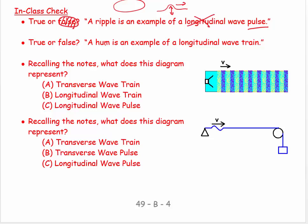True or false: a hum is an example of a longitudinal wave train. It's a train because it goes on and on — oscillation after oscillation. And it's longitudinal because it's in air, so that would be a true statement. Recalling the notes, what does the diagram of a speaker with a tube of air showing compressions and rarefactions represent? That would be a longitudinal wave train.